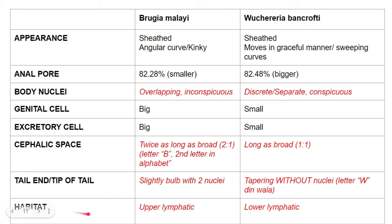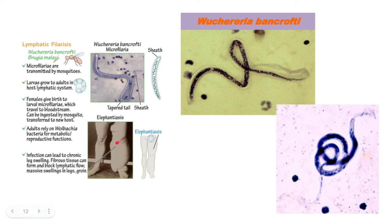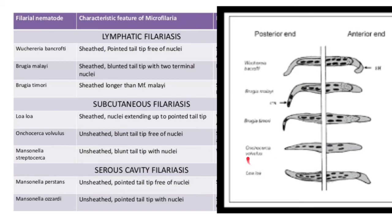Brugia malayi is commonly found in the upper lymphatics, while Wuchereria bancrofti is found in the lower lymphatics. This is a picture of elephantiasis, the manifestation of Wuchereria bancrofti infection — the lower extremities swell due to accumulation of lymph fluid caused by blockage.